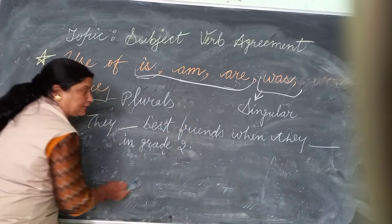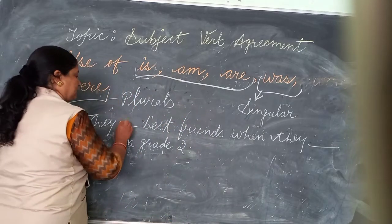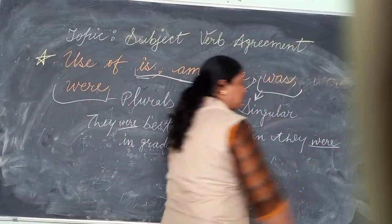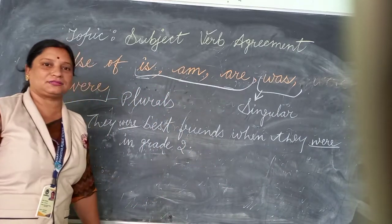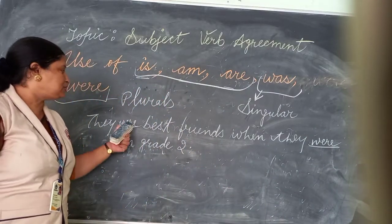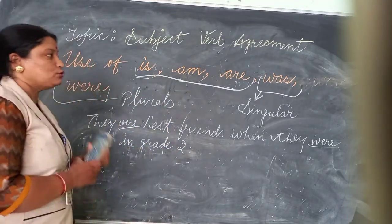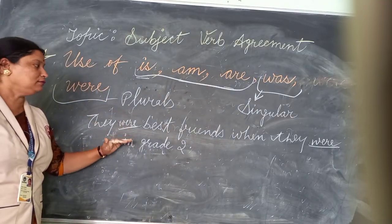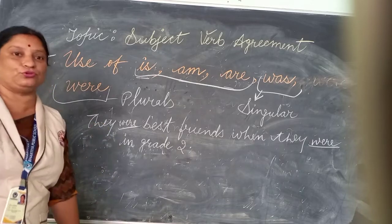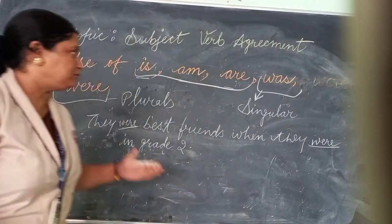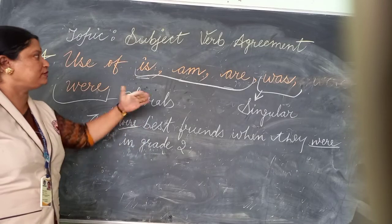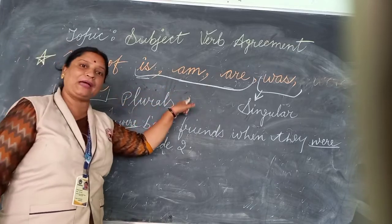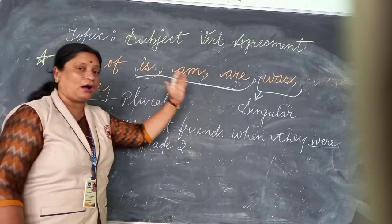They were best friends when they were in school, because we are talking about the past. So this is the use of was and were. With singulars we use was and with plurals we use were. And when we talk about the past we use was and were. When we talk about the present time we use is, am, and are. With singulars we use is and am, and with plurals we use are.